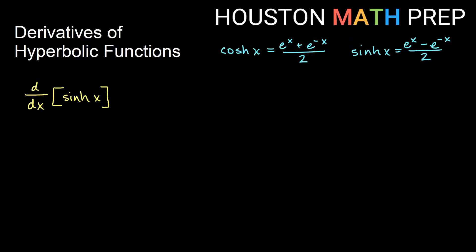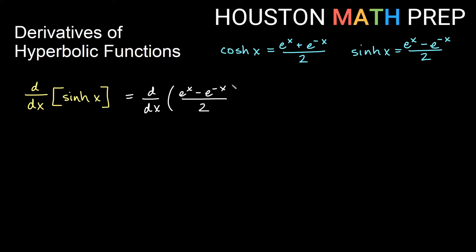Up in the corner here I've got my cosh and my sinh exponential definitions. We'll use those just a little bit in these videos. If we want to figure out the derivative of sinh of x first, that is going to be the derivative of — using the exponential definition, because most of us are probably good with taking the derivative of an exponential if we're already working with hyperbolic functions.